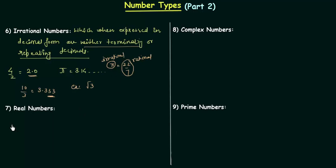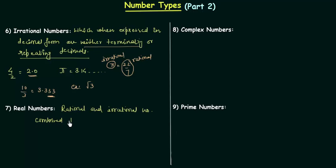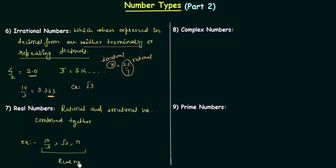Now we will move to the seventh type: real numbers. Real numbers are rational and irrational numbers combined together. For example, 10 by 3 is a rational number, root 3 is an irrational number, and pi is an irrational number — so all three of these are real numbers.